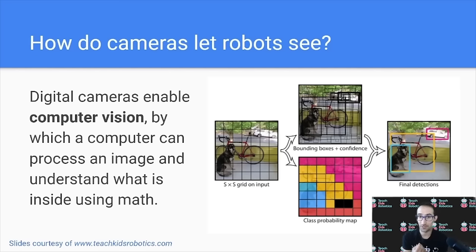So consider the image on the right. We can separate this digital image into a grid, and then we can perform mathematical operations on that grid in order to classify or identify what is in the image. And we can see on the right side, we can identify the dog or the bike or the car in the background, all using math on the original image.